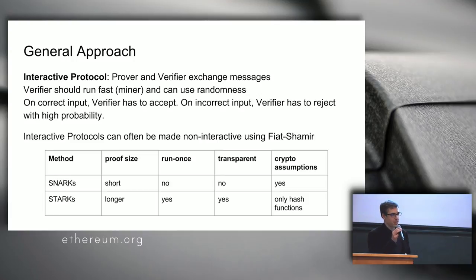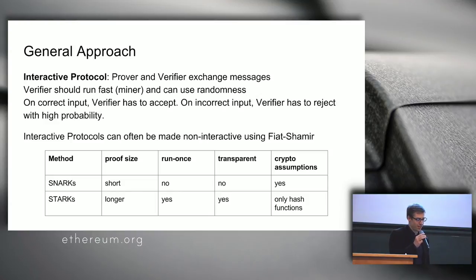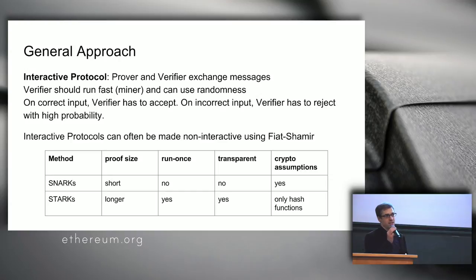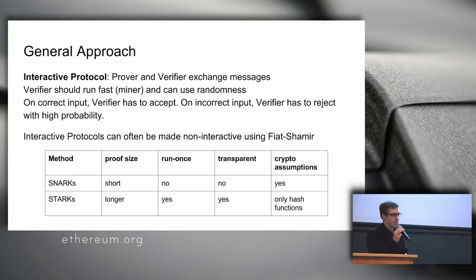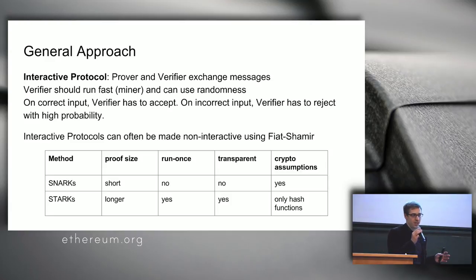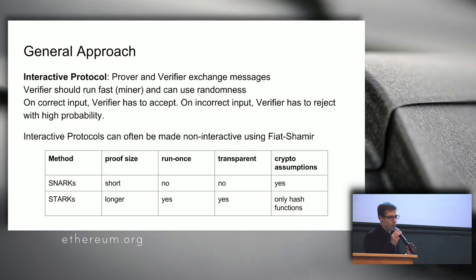Let's compare SNARKs and STARKs. SNARKs stands for Succinct Non-Interactive Arguments of Knowledge, and STARKs stands for Succinct Transparent Arguments of Knowledge, although STARKs are also non-interactive most of the time. The proof size for SNARKs is very short — something like 188 bytes, mostly regardless of the size of the computation. For STARKs, proofs are longer, currently in the range of 400 kilobytes.